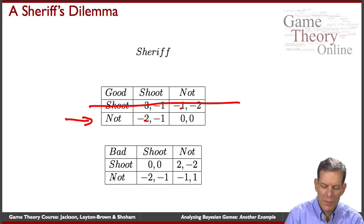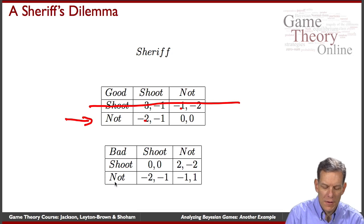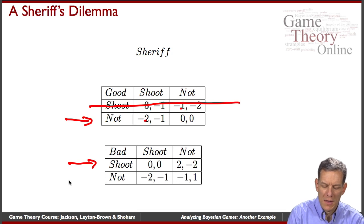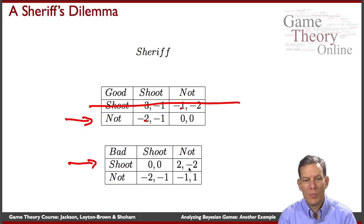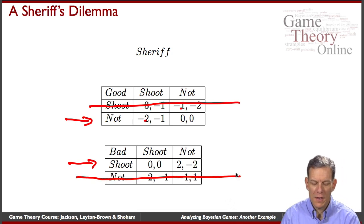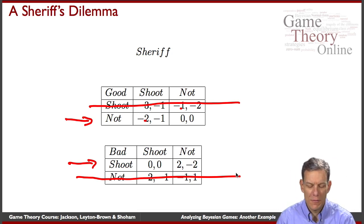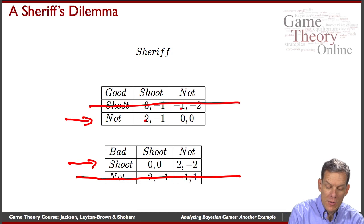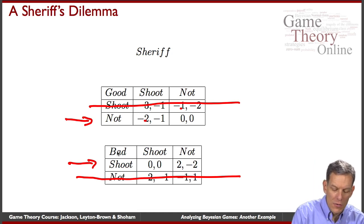So we can cross this out and say that the only possible strategy for a good player is that they're not going to shoot. Okay now we go to the bad player and we do a similar kind of calculation and basically the criminal is going to shoot in this case. So we look, the zero versus minus two, two versus one, that's shoot strictly dominates not for the bad player once they know their type. So that tells us that in terms of either an interim plan or even if we go back ex ante and try and figure out what these players should do, basically the good one should not shoot and the bad one should shoot.